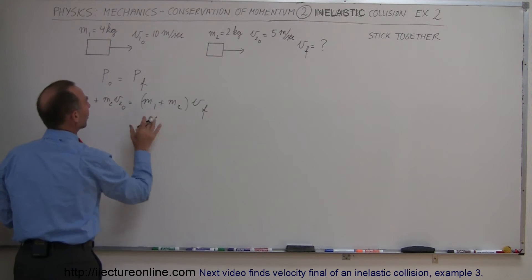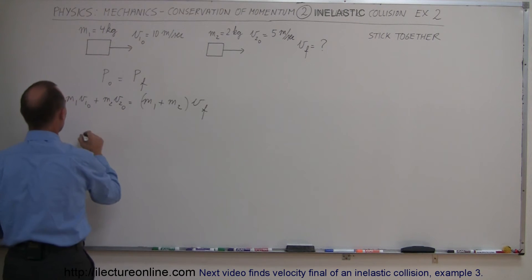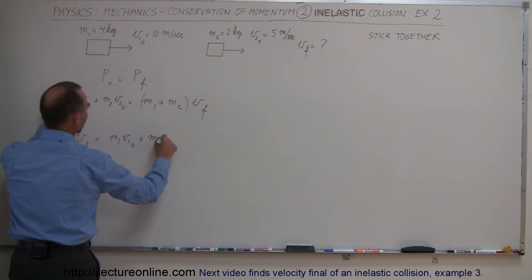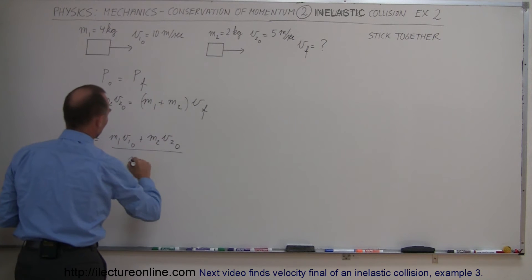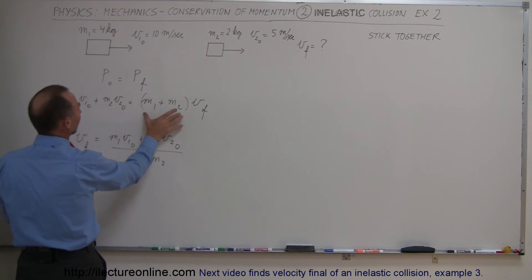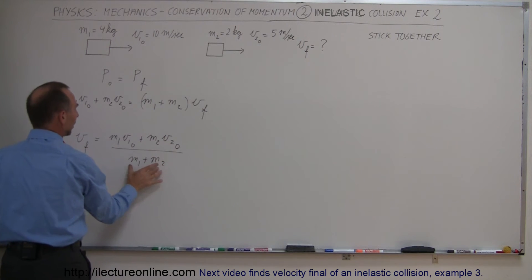So let's divide both sides by m1 plus m2 and turn the equation around. So we have v final is equal to this quantity right here, which is m1 v1 initial plus m2 v2 initial divided by m1 plus m2. So I switched the equation around and divided both sides by m1 plus m2.